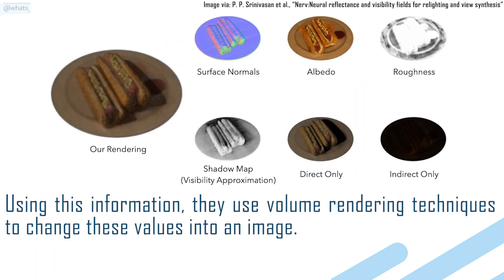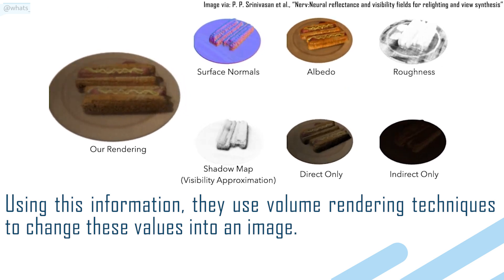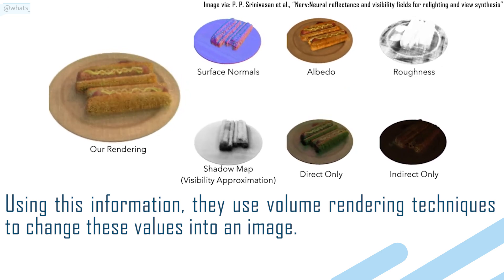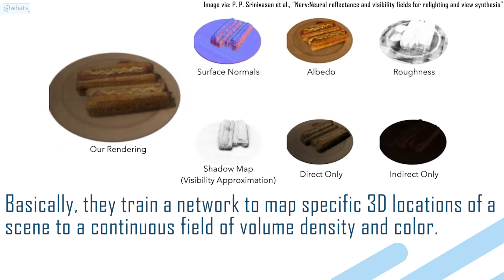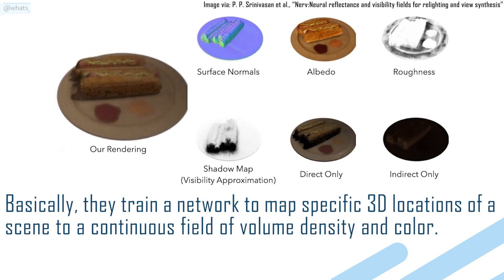Using this information, they use volume rendering techniques to change these values into an image. Basically, they train a network to map specific 3D locations of a scene to a continuous field of volume density and color.